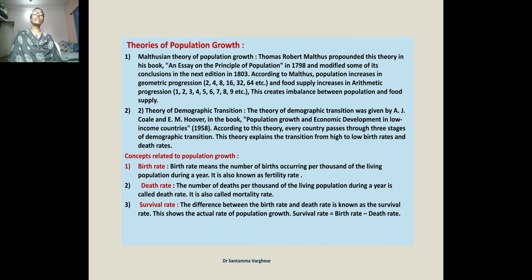Malthus states that correction of this imbalance can be done by introducing preventive checks such as marriage and moral restraints. He also mentions positive or natural checks such as natural calamities. Natural checks operate to wash out the excess population and maintain this balance. However, preventive checks are more dependable out of the two.